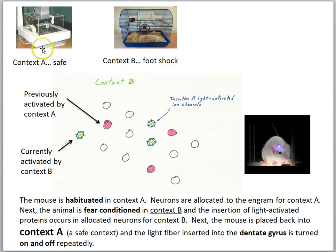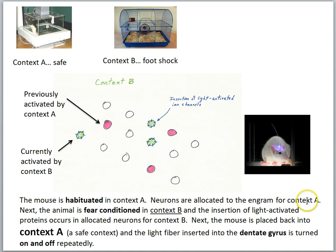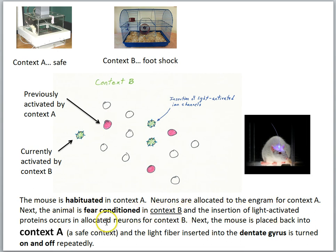Consider the following experiment: context A will be the safe environment and context B the environment where the animal receives a shock. The mouse is first habituated in context A, so the pink cells become active and are allocated to the engram for context A — a safe place. Next, the animal is fear conditioned in context B, and insertion of light-activated proteins occurs in the neurons allocated to context B.